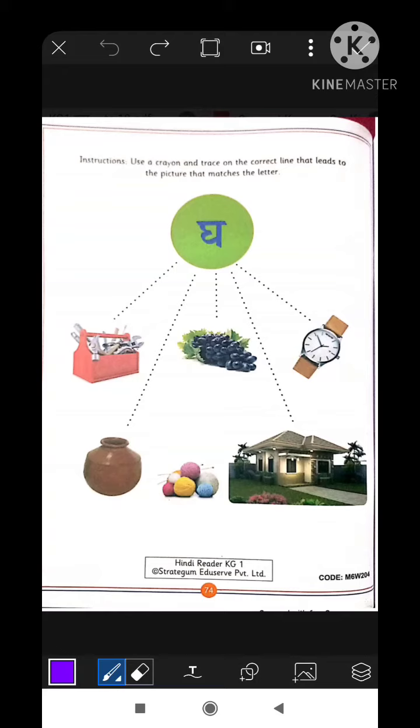The first picture is of Ghaadi. Gha se Ghaadi. It starts with Gha, so we are going to match. We are going to trace the dotted line between the letter Gha to the picture of Ghaadi.